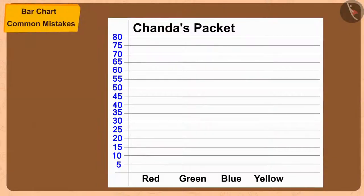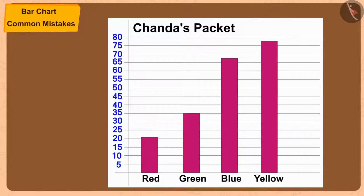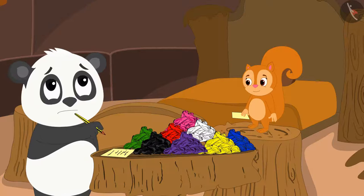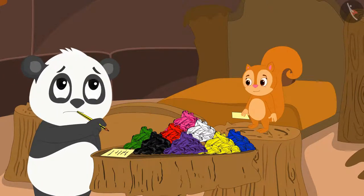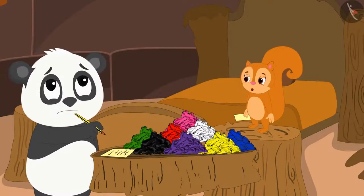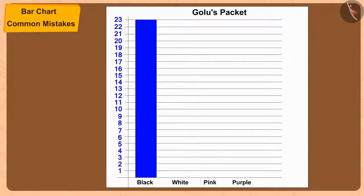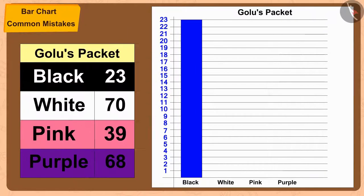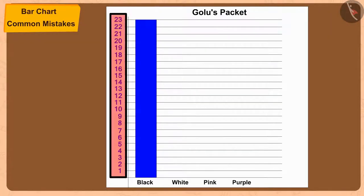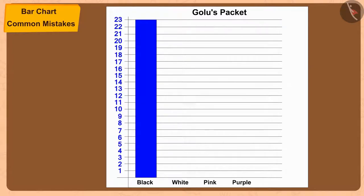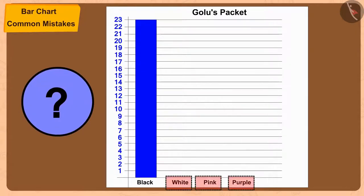Chanda quickly created her bar chart. But Golu is stuck after making an incomplete bar chart. He explains: 'I have made half the bar chart, but the number of white balloons is 70, and on my paper I can write numbers only up to 23 on this vertical line. How do I show the number of white balloons in this bar chart?'